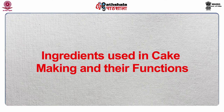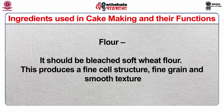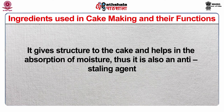We are going to discuss the various ingredients used in cake making and their functions. The first one is flour. It should be bleached soft wheat flour. This produces a fine cell structure, fine grain and smooth texture. It gives structure to the cake and helps in the absorption of moisture. Thus, it is also an anti-staling agent.